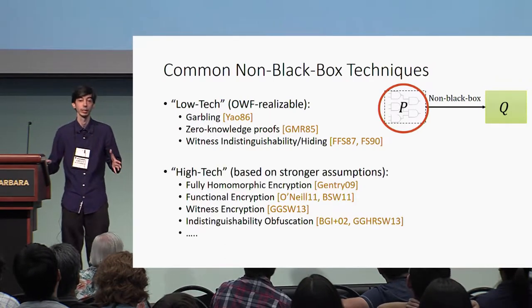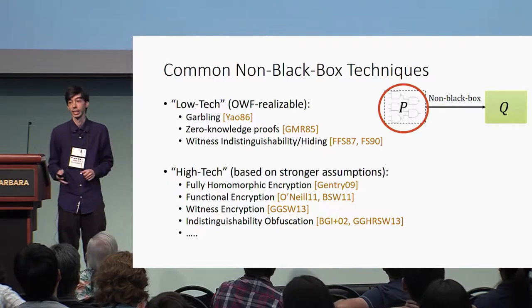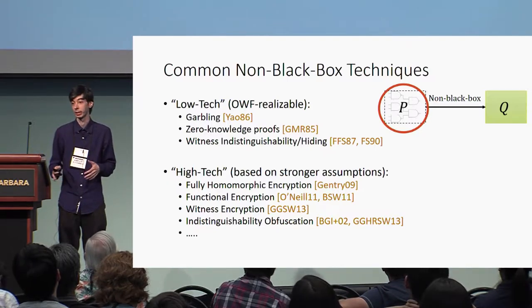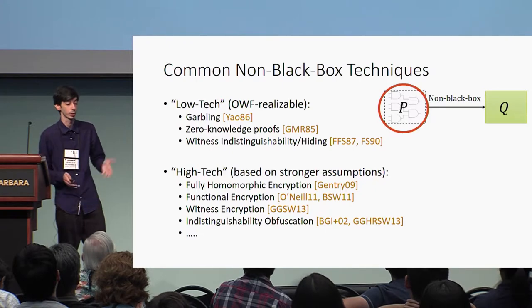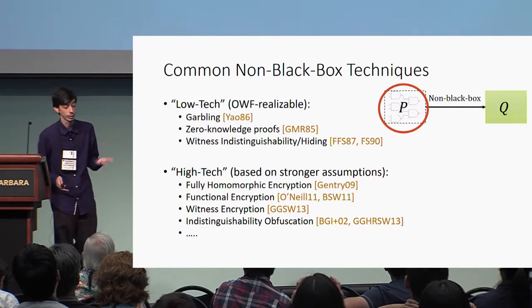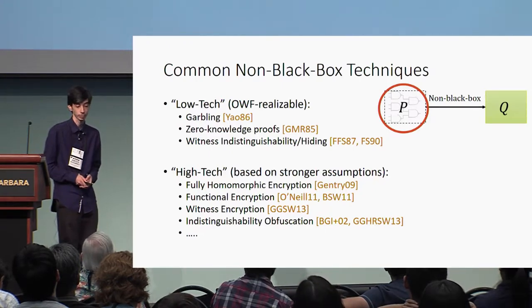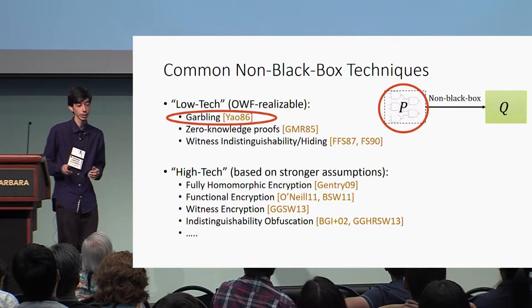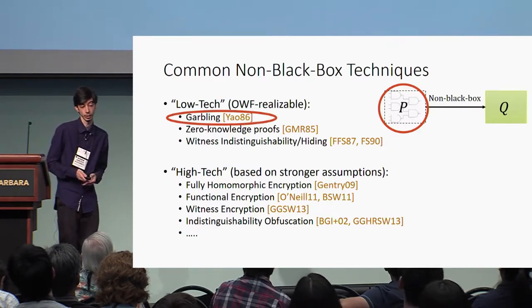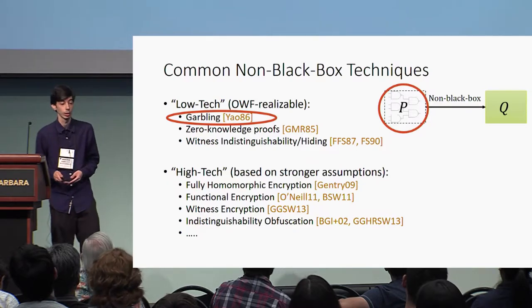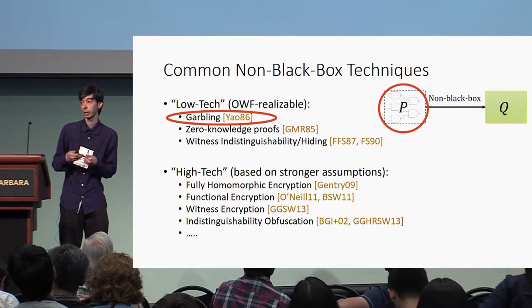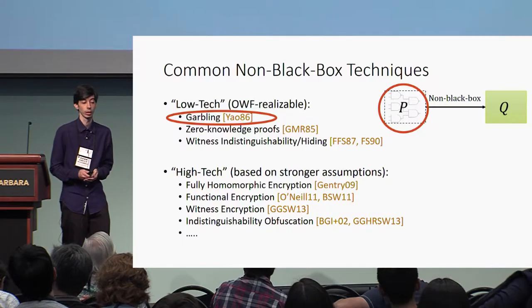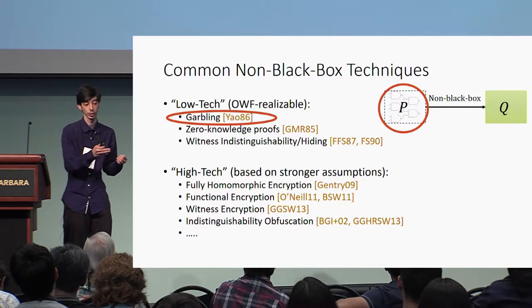The second category, which we call high-tech, consists of techniques that require stronger assumptions, such as fully homomorphic encryption or even indistinguishability obfuscation (I.O.). In this talk we will focus on the widely used non-black box technique of garbling, which as we will see later on will also imply limits on the other low-tech techniques.